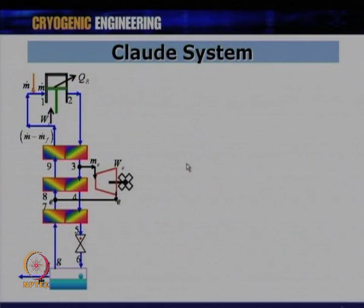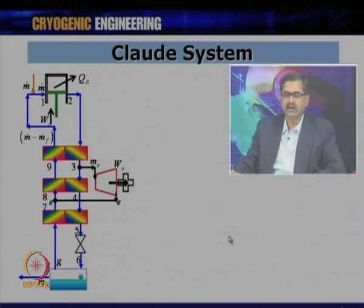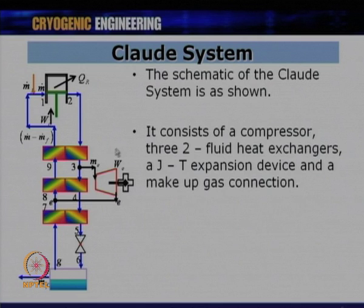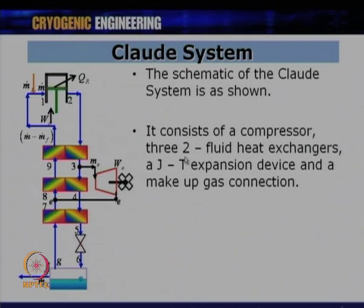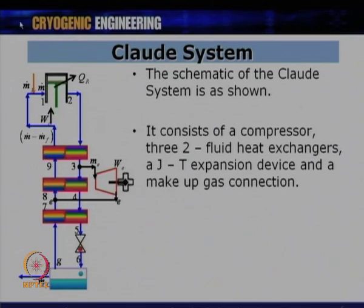The schematic of the Claude cycle has a compressor, an expander, heat exchangers 1, 2, and 3, and a JT valve at the end where liquid is yielded in a container. The system consists of a compressor, two-fluid heat exchangers, a JT expansion device, and a makeup gas connection. After collecting the liquid, the return gas m_dot_f is replaced by makeup gas at that point.